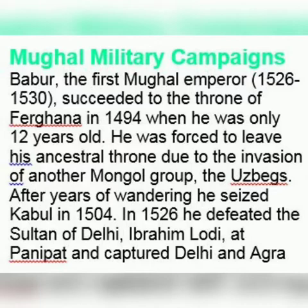The Mughals were the last powerful descendants of the Mongols. 'Mughal' is the Persian word for Mongol. Under the inspired leadership of Babur, they took advantage of the absence of a strong central power to invade India and establish Mughal rule in Delhi.